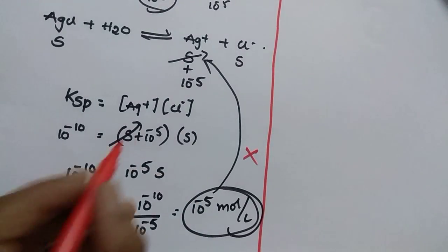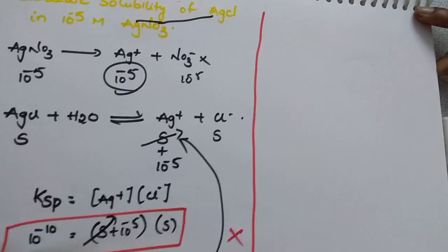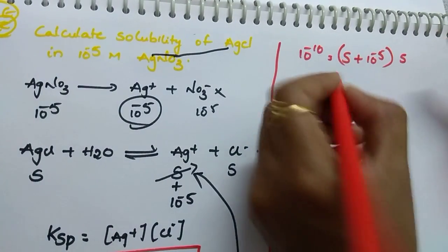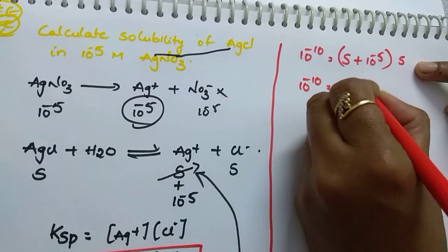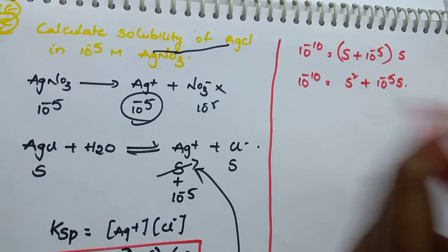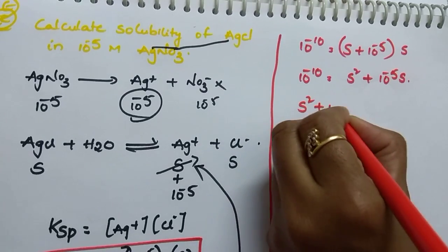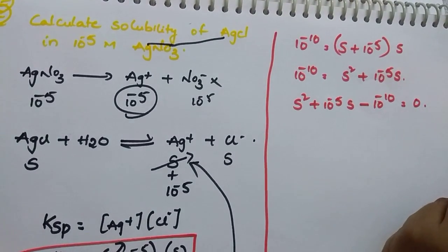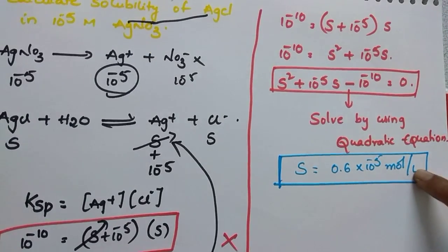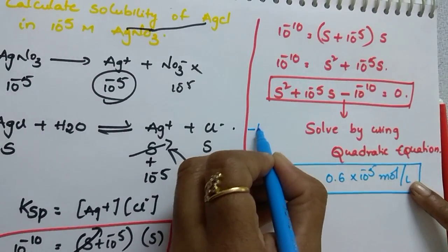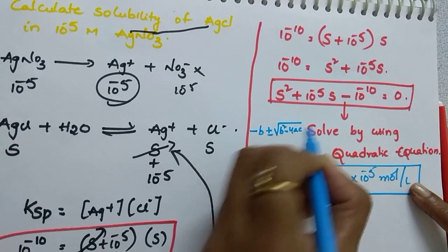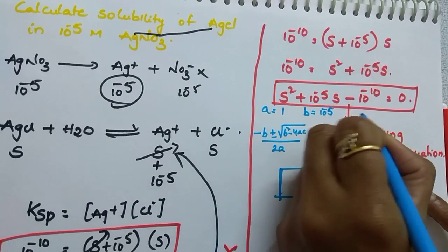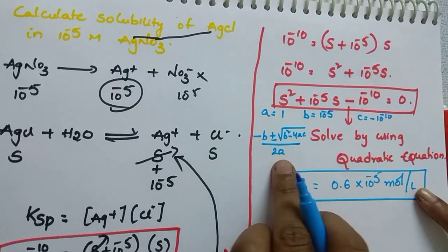Without neglecting, the full expression is: 10^-10 = (s + 10^-5) · s, which expands to s² + 10^-5 · s - 10^-10 = 0. Solve this using the quadratic formula: s = [-b ± √(b² - 4ac)] / 2a, where a = 1, b = 10^-5, and c = -10^-10. Substituting gives the correct value of s.